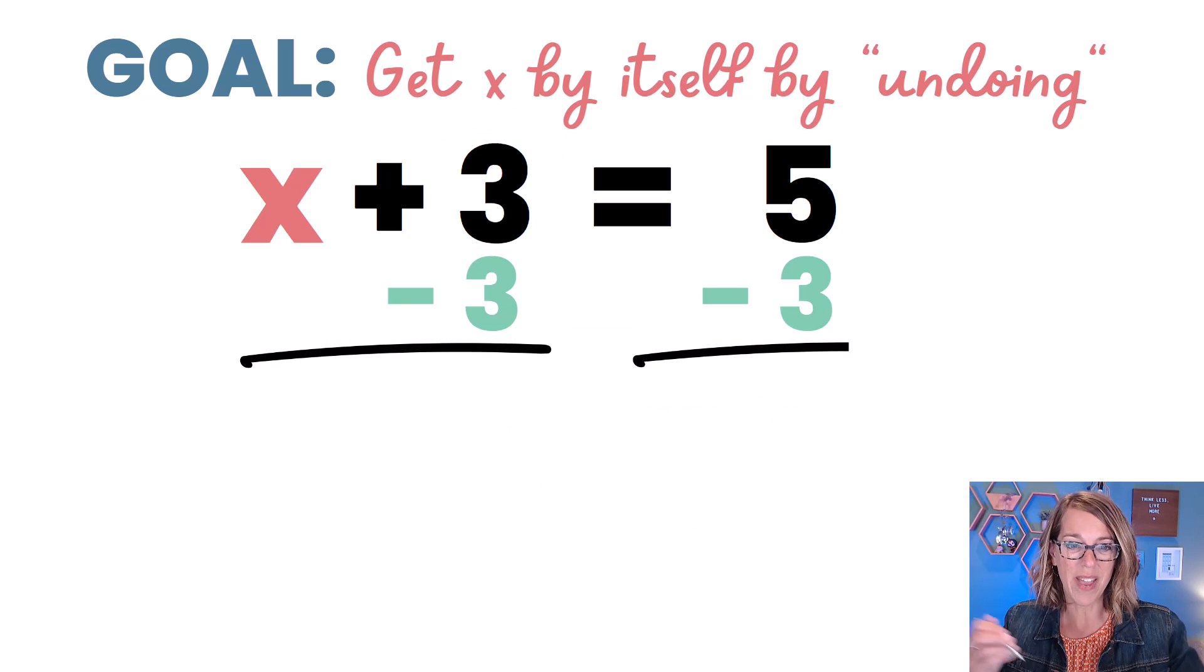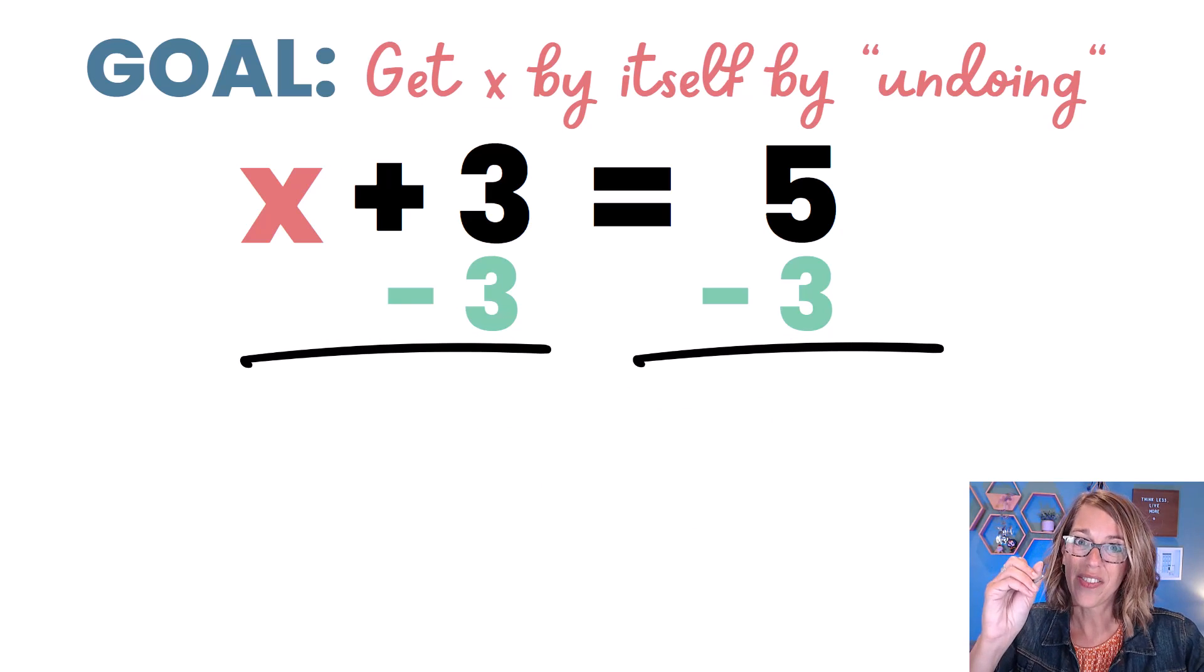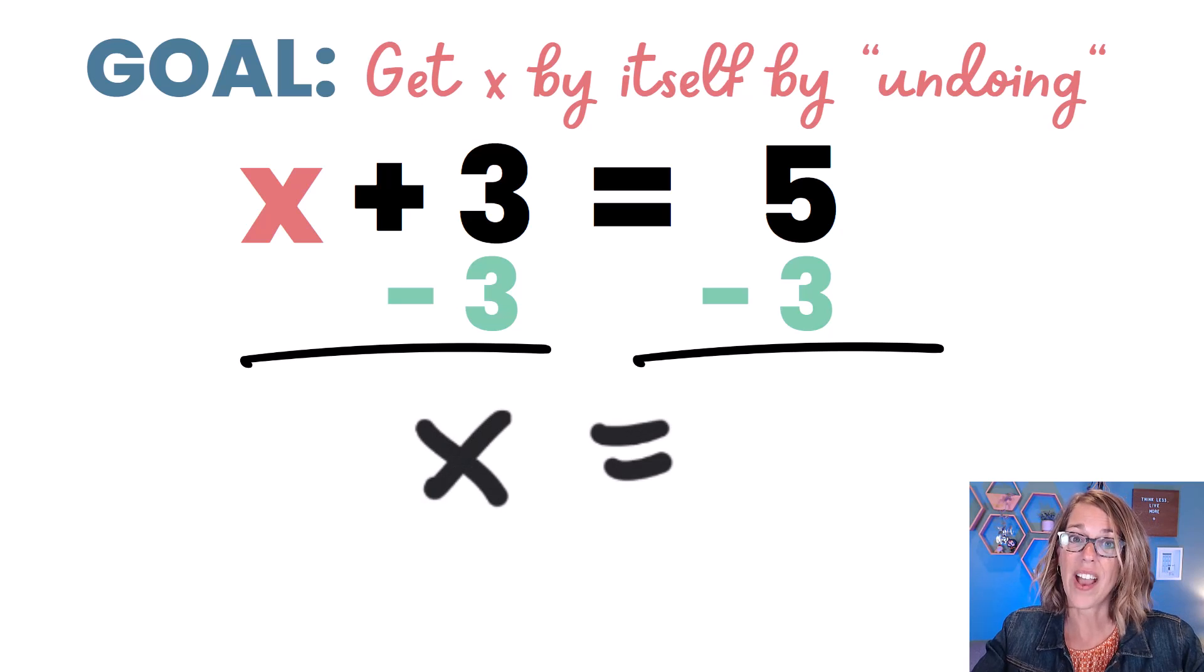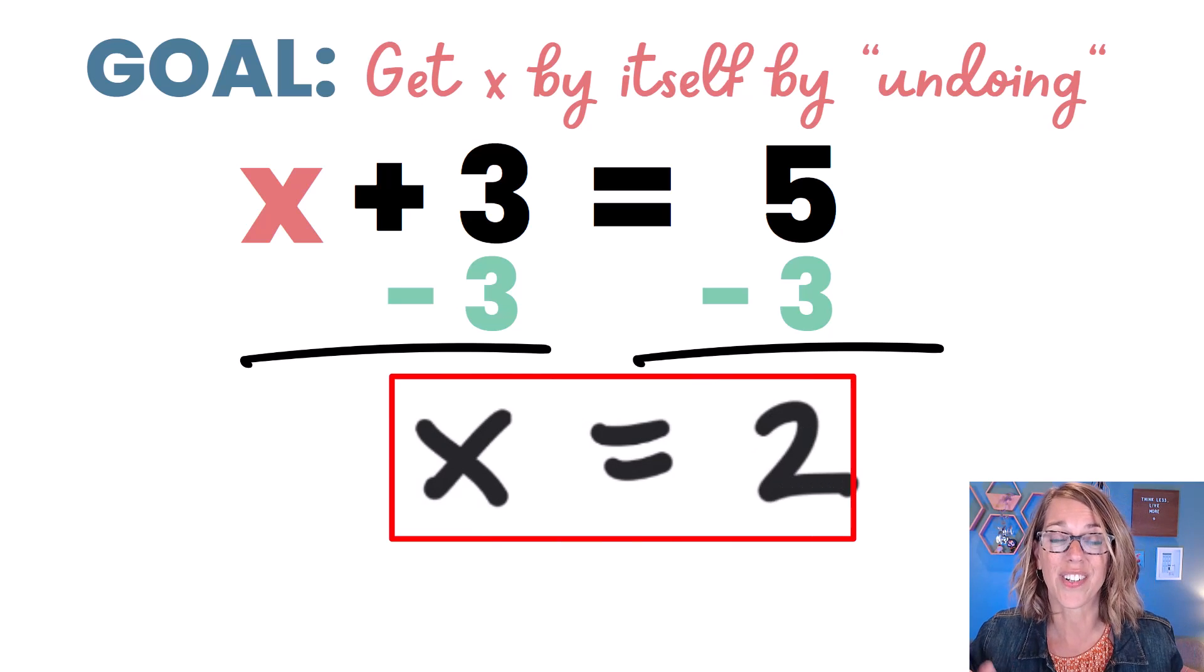As I do the math to work this one out, I've got the 3 minus 3 turned out to be a 0. So I get just an x on that side, and on the other side, 5 minus 3 is equal to 2. And our answer, our solution, is x equals 2.